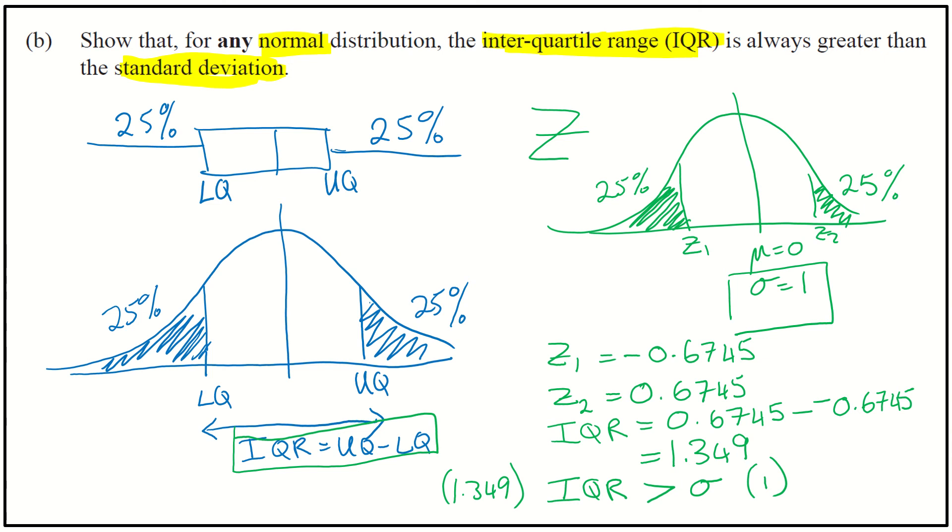So if you were able to identify the graph in terms of this part here, talking about the 25% upper and lower quartiles, then that would have given you a U for achieved. If you're able to find that interquartile range here of 1.349, then that would give you the merit. And if you can then write me some kind of conclusion, then that would give you the excellence.